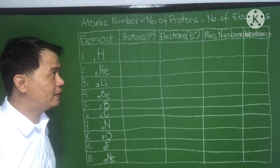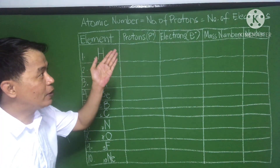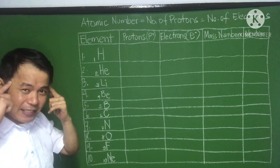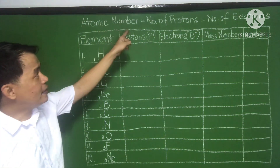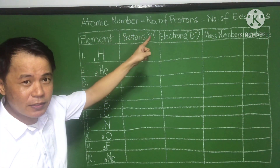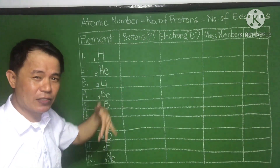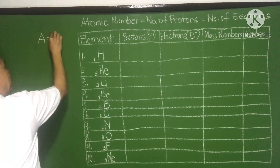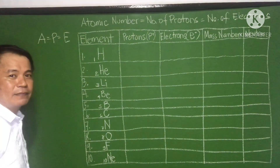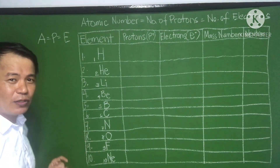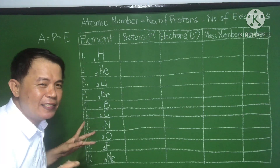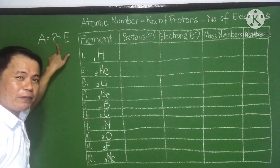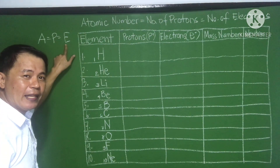Those are the atomic numbers. Now, how can we determine the number of protons and the number of electrons? Just memorize this: the atomic number is equal to the number of protons and is equal to the number of electrons. Or simply, A equals P equals E — like the word 'ape.' So atomic number equals number of protons equals number of electrons.